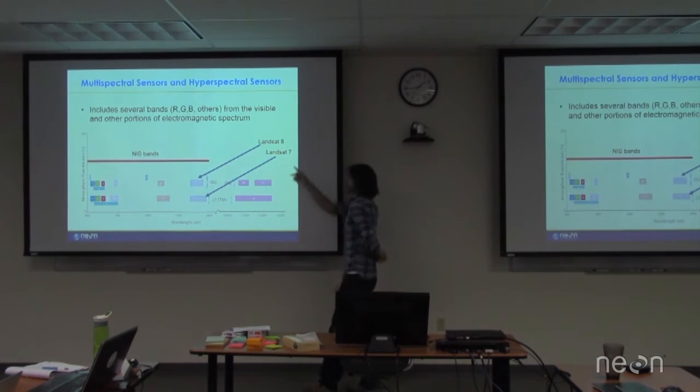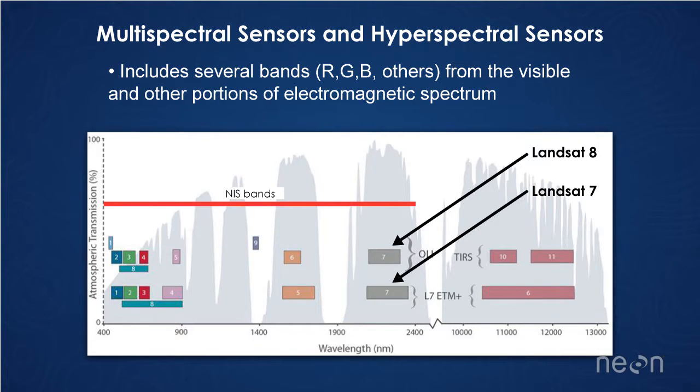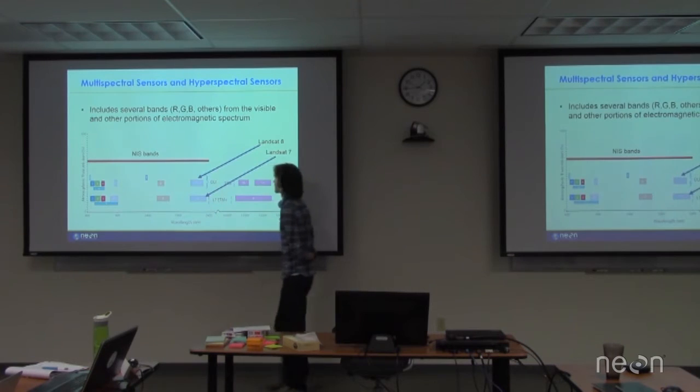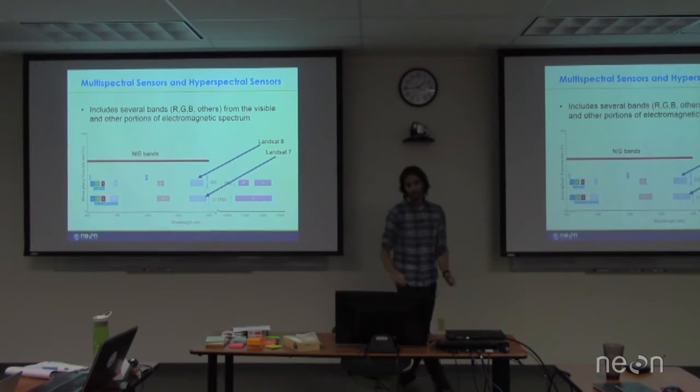I've got examples of Landsat 8, Landsat 7 here, which are two satellites. You can see that they're collecting information, these other portions of the spectrum. Here's our visible portion way down here. And as we move up near infrared, middle infrared up here.